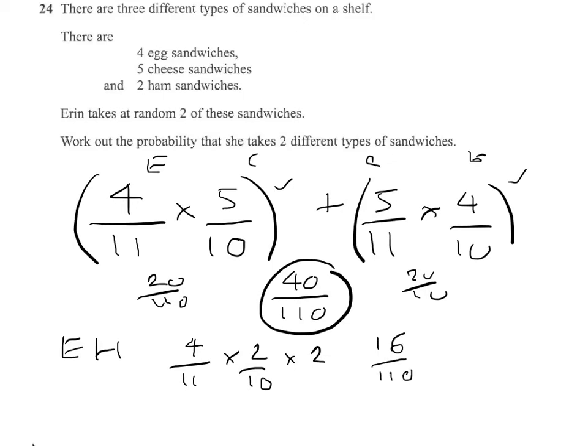So that's two of the possibilities, there's three possibilities. So we've done egg with cheese, we've done egg with ham. So that leaves cheese and ham. The cheese and ham will be five from eleven times two from ten and times two again. And that's going to give me twenty from one hundred and ten.